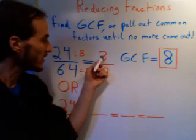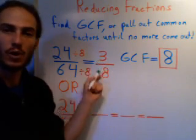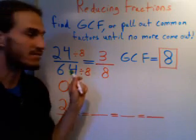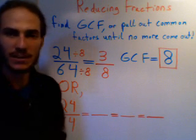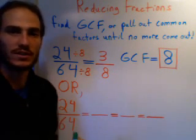Again, you want to just make sure and check, there's no number other than 1, no whole number other than 1, that will divide out of 3 and 8 evenly. That tells us our fraction is simplified and reduced.